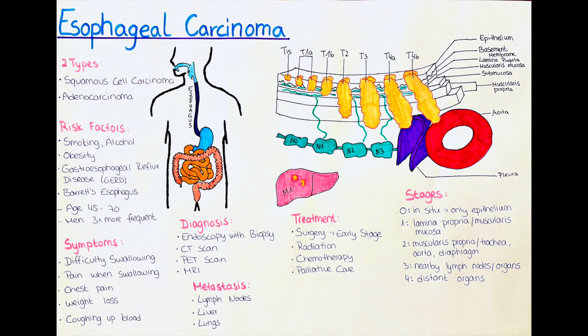Esophageal carcinoma is staged according to the extent of the cancer and how far it has spread. Accurate staging is important for determining the best treatment options and predicting the patient's prognosis. The TNM staging system uses three factors: T for tumor, N for lymph nodes, and M for metastasis.